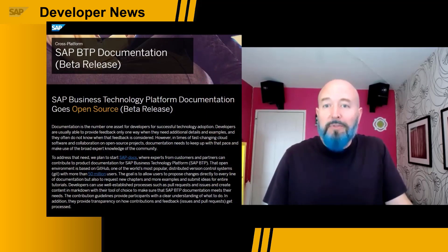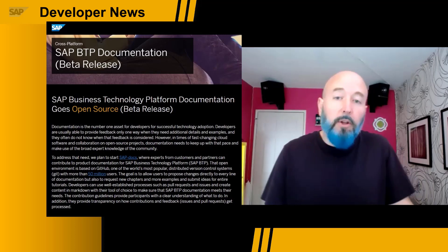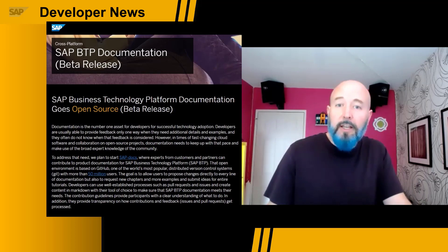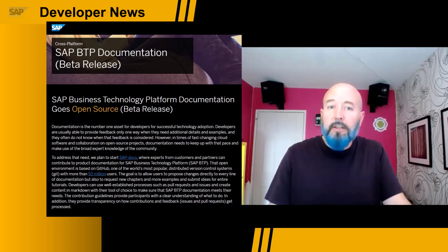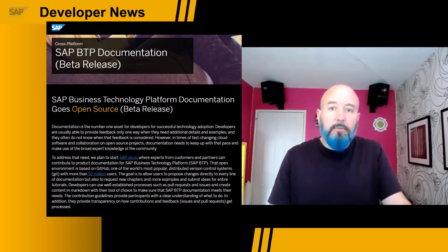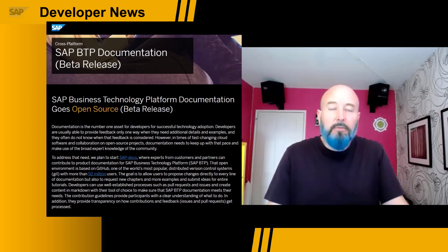The last item: SAP documentation has gone open source. You may have seen this release late last month when a blog post came out from our colleague DJ Adams. This beta release includes the Business Technology Platform as well as the Cloud Application Programming Model, CAP. We also wanted to highlight that contribution guidelines and a partner charter are available. We're promoting this because the Sapphire audience may not be aware of how much SAP is embracing open source, and the software our customers and partners use will only get stronger if the documentation is a living, breathing document we all collaborate on together.